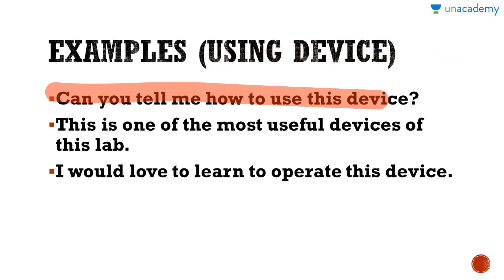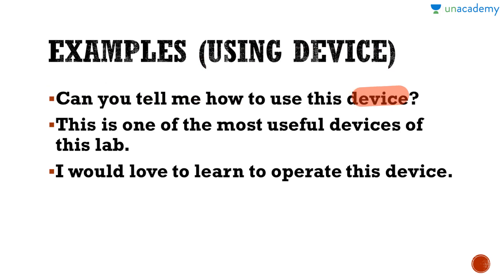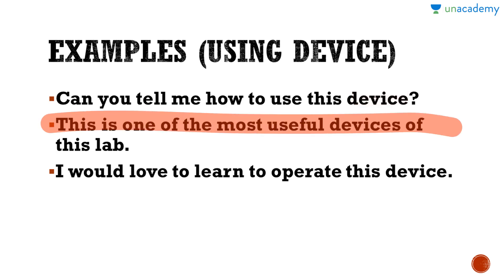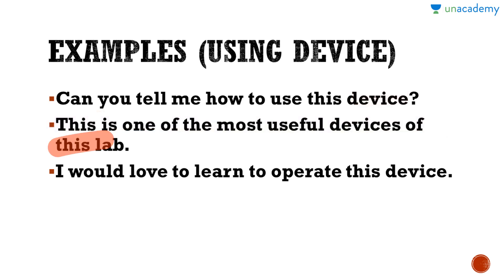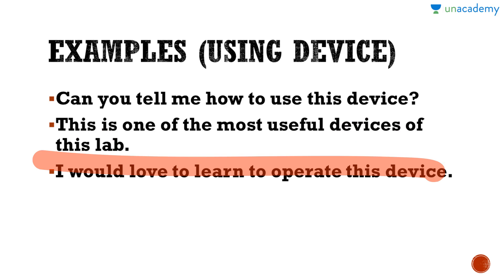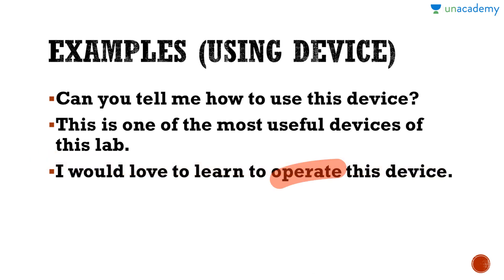Here are examples using the word DEVICE, which means a tool or a plan. First: can you tell me how to use this device? — meaning, how to use this tool or machine. Next: this is one of the most useful devices of this lab — meaning one of the most useful tools or machines. Last: I would love to learn to operate this device — meaning to control or use this machine.